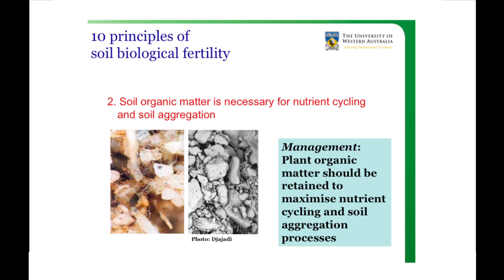The second principle is that organic matter is necessary for nutrient cycling and soil aggregation. I want to emphasise this aggregation of the soil — it's so important. Historically we used to think there was such a thing as recalcitrant organic matter, but the current thinking is there's no real such thing, unless you look at wood chips. Most agricultural plant matter will degrade very quickly, so you need to aggregate the soil in order to protect the organic matter. That's an important principle.